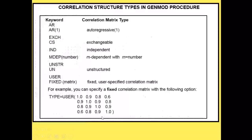The correlation structures available in GenMod include AR and AR1 for autoregressive, exchangeable (also called compound symmetry), independent, M-dependent for stationary, unstructured, and user-fixed for arbitrary numerical specifications. These are all the options available for specifying the working correlation structure when using GenMod.